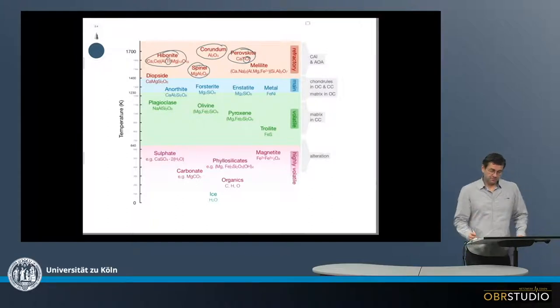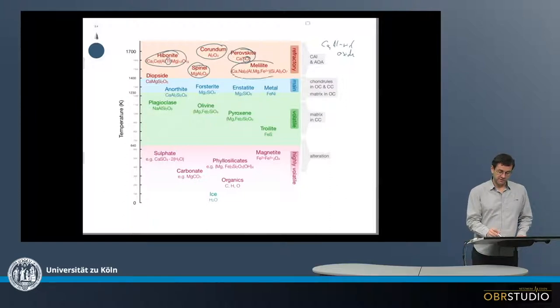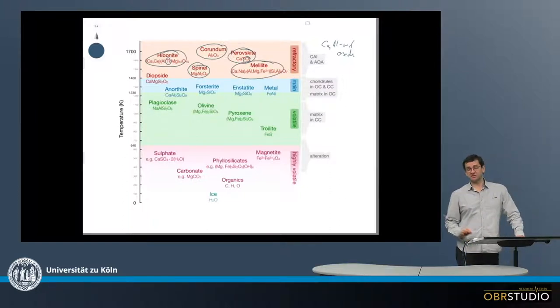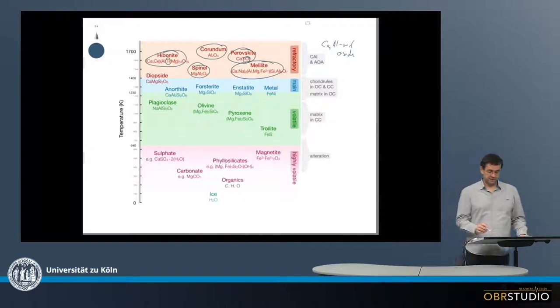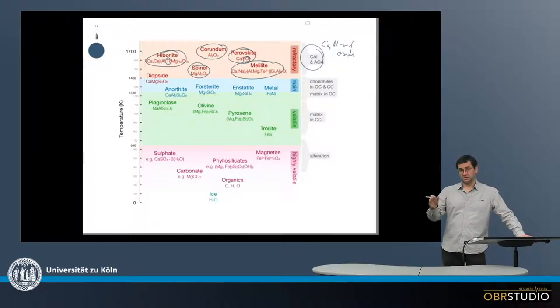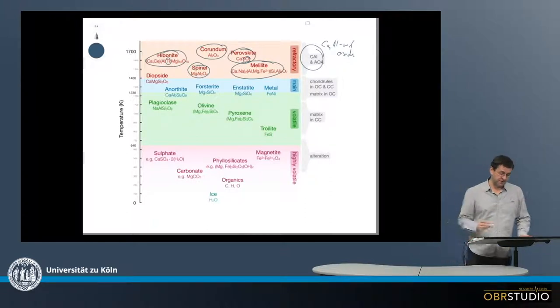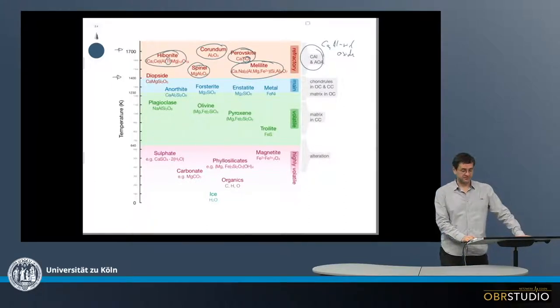All these high-temperature condensates are primarily calcium-aluminum-rich oxides with, in some cases, silicates such as melilite. These high-temperature condensates form the CAIs and also AOAs—amoeboid olivine aggregates. This occurs between about 1700 and 1400 Kelvins.